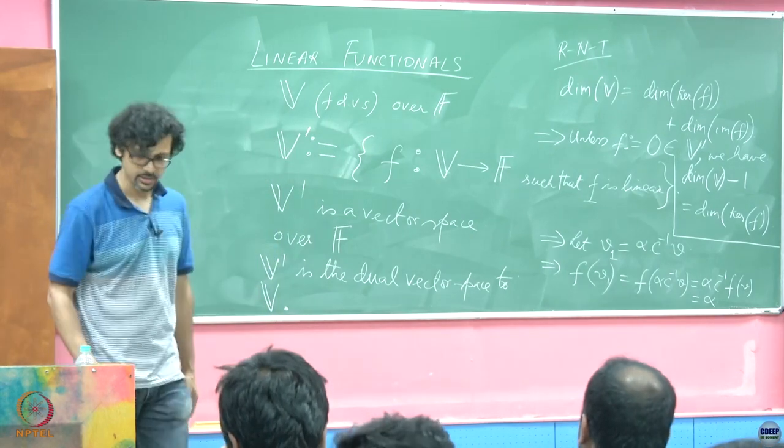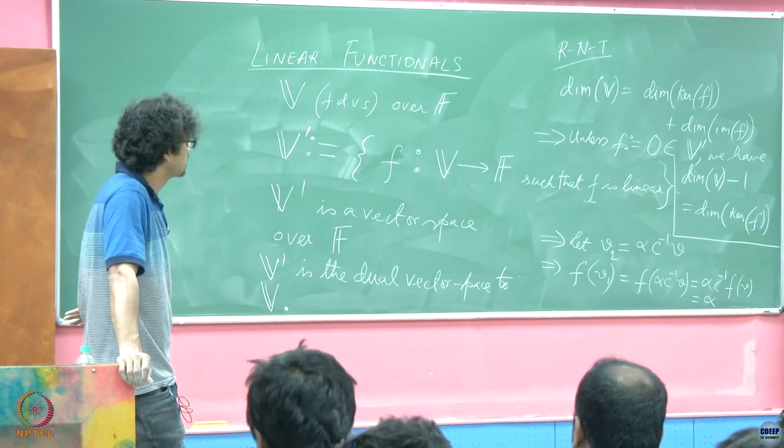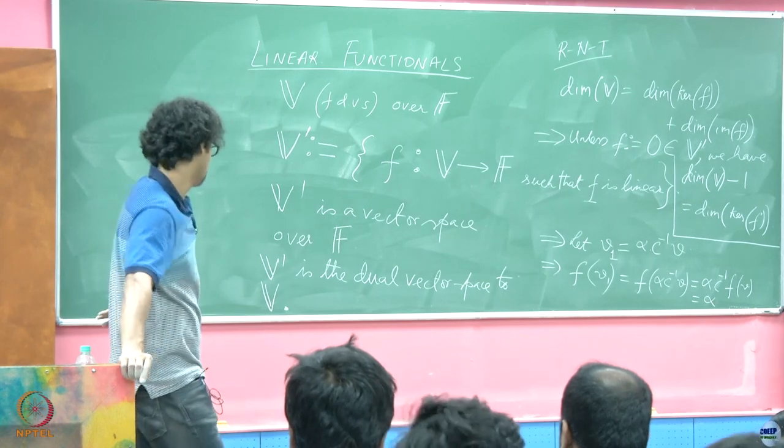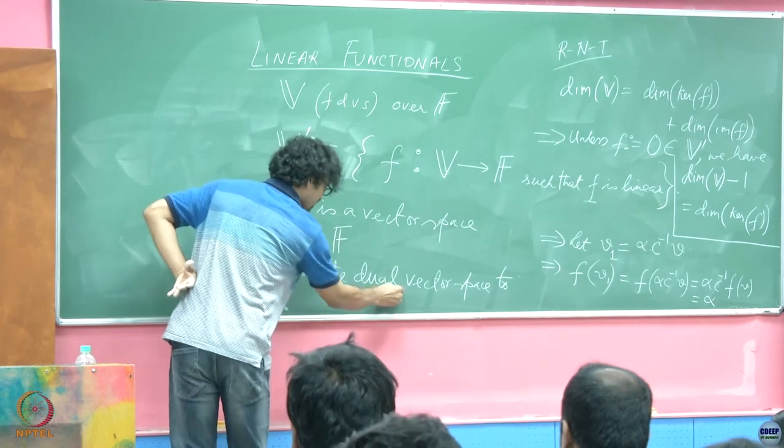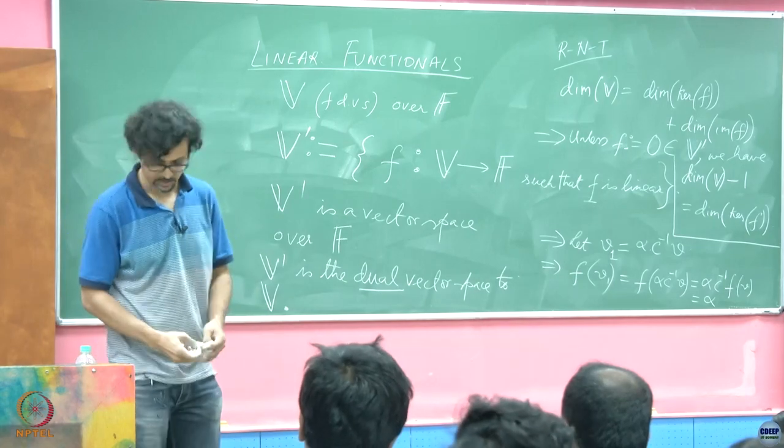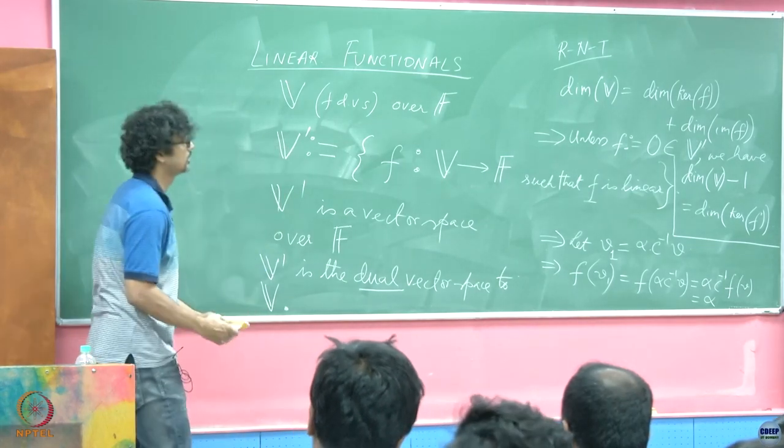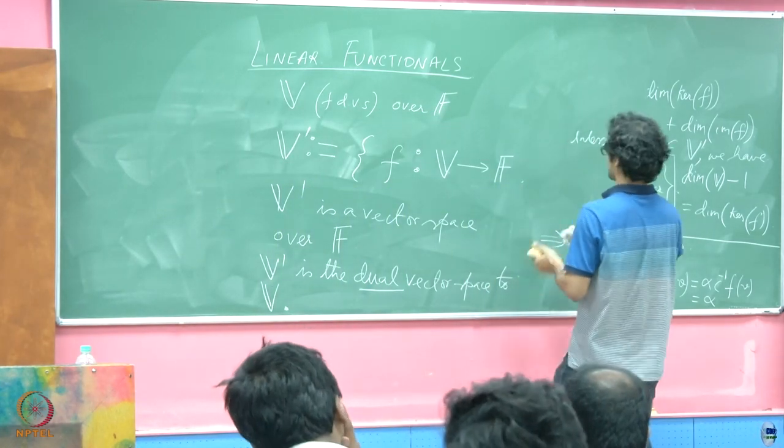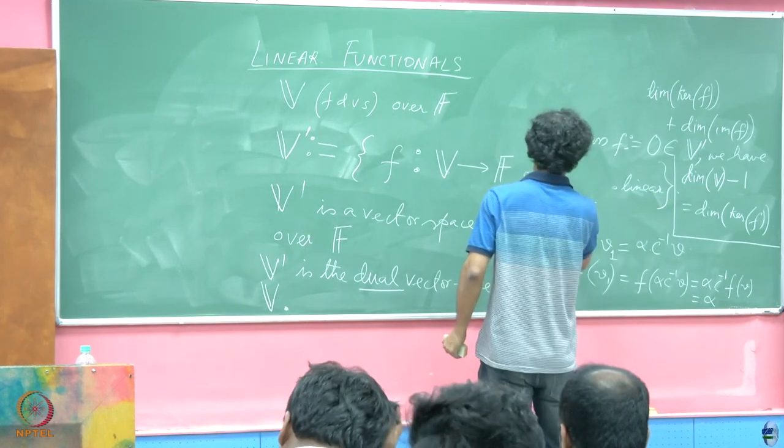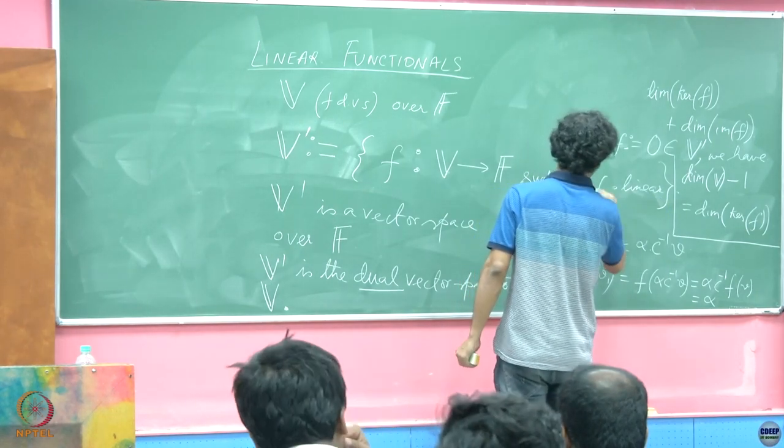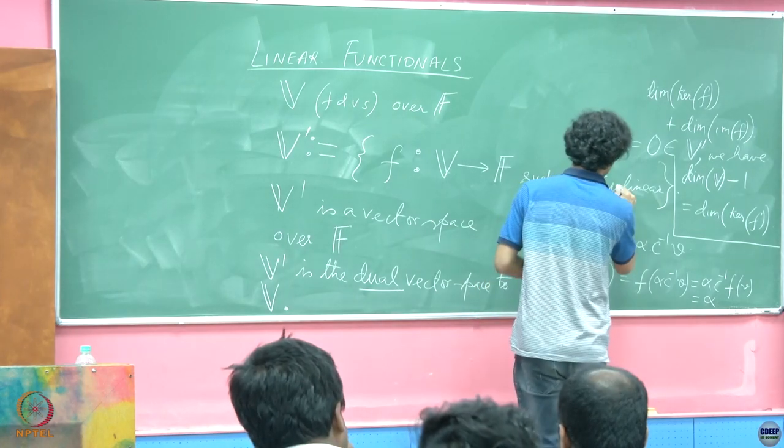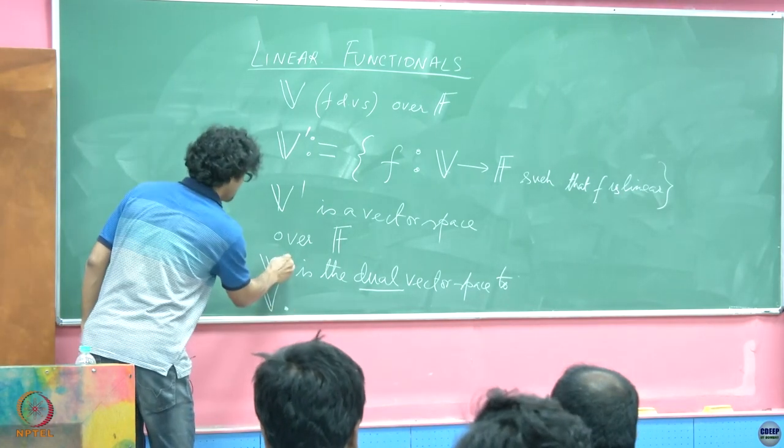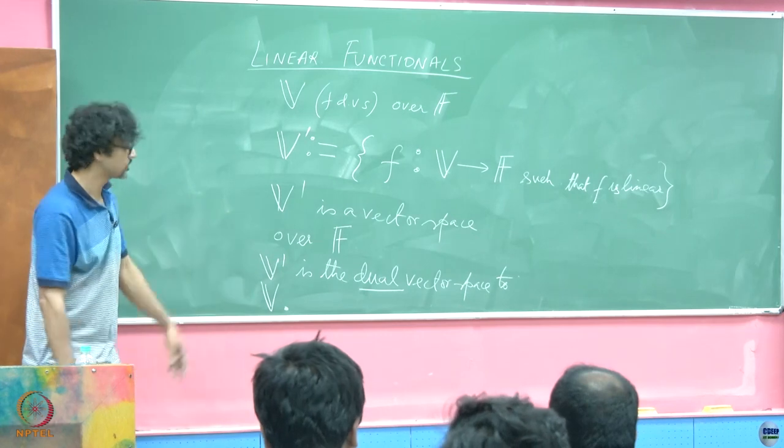So therefore we have unless F is equal to the zero functional, we have dimension V minus 1 is equal to dimension of the kernel of F. Straightforward, nothing too great about it. It follows from very obvious arguments.